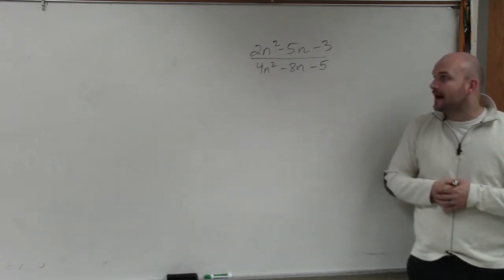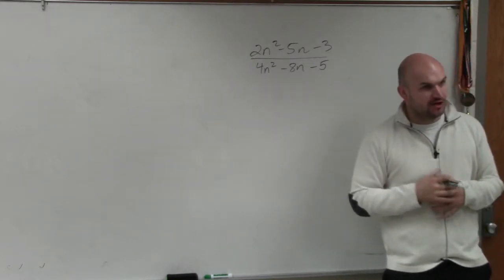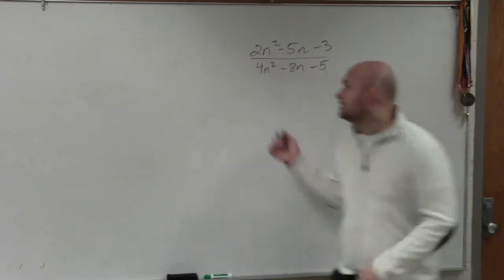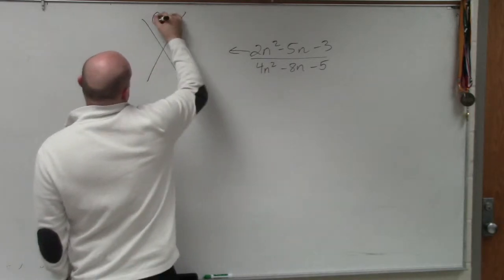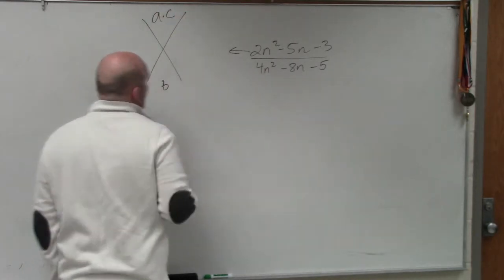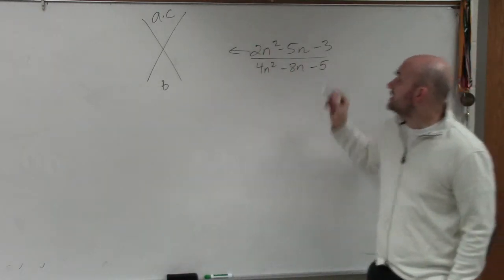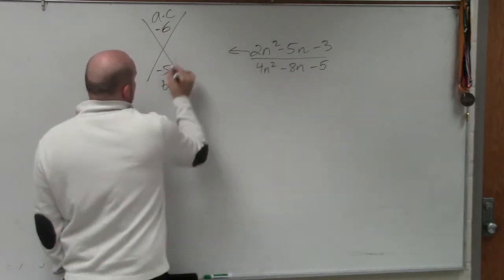Now I'm going to do one the long way, and then I'll do one the short way. So let's do this one the long way. What you guys notice in this example is we have a is not 1 like the last example. We have a is now 2. So when I do a times c, I get 2 times negative 3, which is negative 6, and b is negative 5.